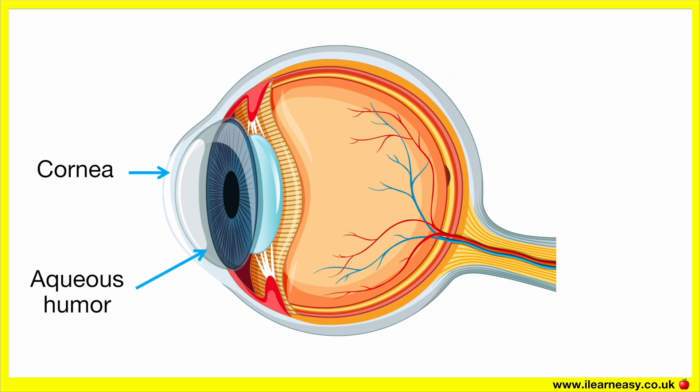Aqueous humour. This is the watery fluid found in the front of the eye, present in both the anterior and posterior chambers. It is produced by the ciliary body and flows from the posterior chamber through the pupil into the anterior chamber, then drains through the trabecular meshwork. The aqueous humour provides nutrients to the cornea and lens and maintains intraocular pressure.